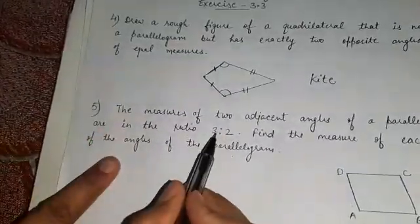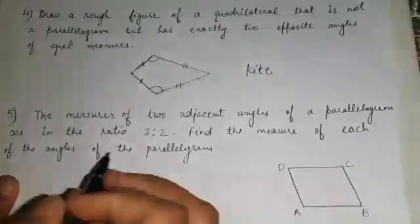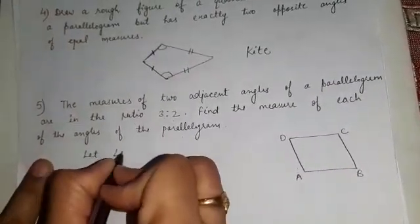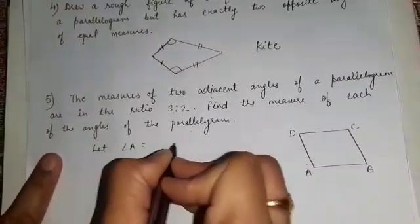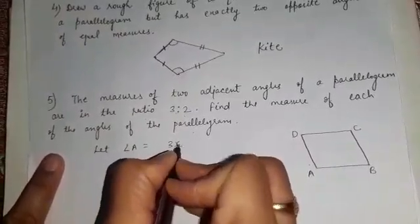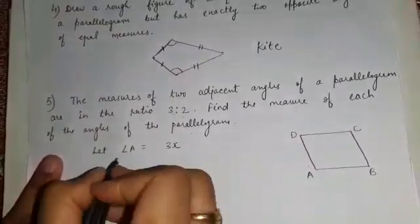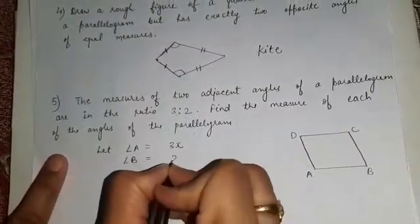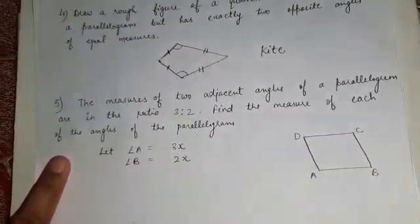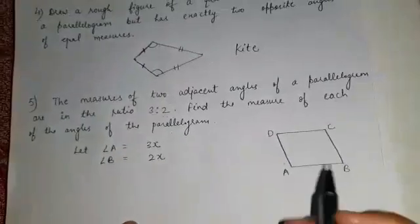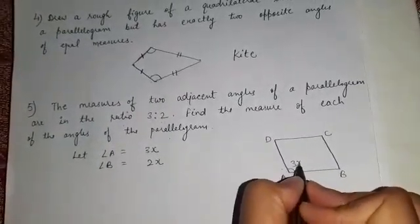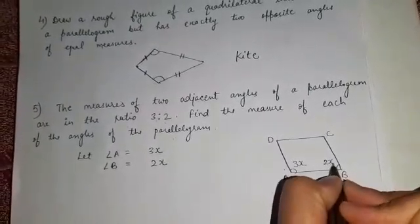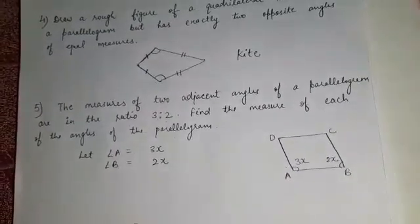Let us take this as parallelogram ABCD, where we are given that the ratio of adjacent angles is 3:2. According to the ratio, let us consider that angle A is equal to 3x and angle B is equal to 2x. That means this angle is 3x and this angle is 2x.